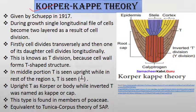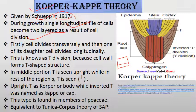The corpus-cap theory is similar to the tunica-corpus theory of shoot apical meristem. It was put forward by Schoute in 1917. The initial meristematic cells first divide transversely, then the daughter cell divides longitudinally, giving the shape of a T — an inverted T-shaped structure. This is known as T-division because the cell wall forms T-shaped structures.